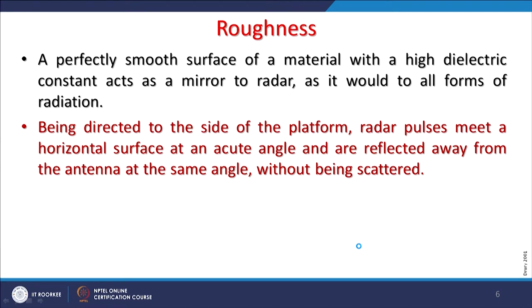Radar pulses directed to the side of the platform meet a horizontal surface at an acute angle and are reflected away from the antenna at the same angle without being scattered. This specular reflection results in a totally black signature for a smooth surface — if all energy is reflected in a direction away from the receiver, those surfaces appear black.